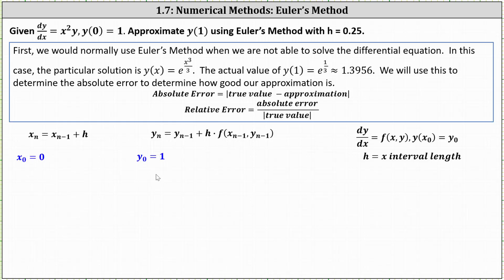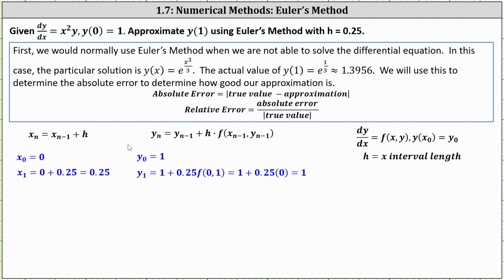Next, we determine x sub 1 and y sub 1. Using our formula for x sub n, when n equals 1, x sub 1 equals x sub 0 plus h, giving us x sub 1 equals 0 plus 0.25, which equals 0.25. Using our formula for y sub n, y sub 1 equals y sub 0 plus h times f of x sub 0 comma y sub 0, giving us 1 plus 0.25 times f of 0 comma 1. Substituting 0 for x and 1 for y into f of x comma y, which equals x squared y, gives 0. Therefore y sub 1 equals 1 plus 0.25 times 0, so y sub 1 equals 1.